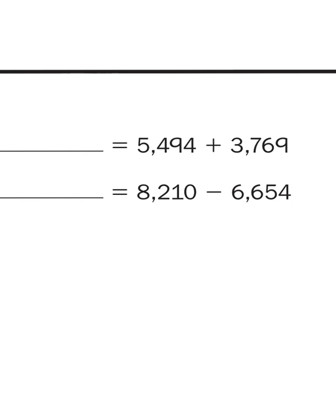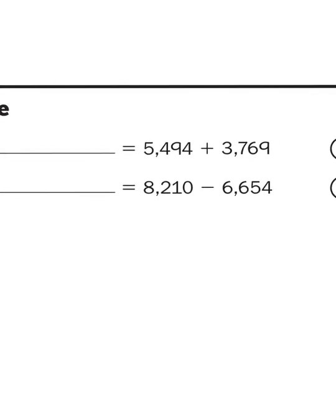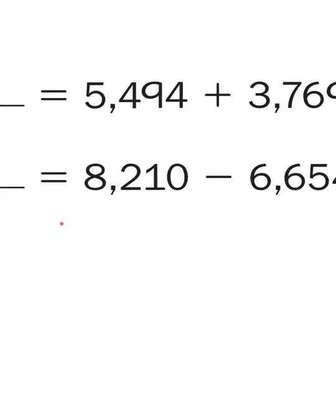And let's try number two - not number two, it's number six, but it's the second problem right here: 8,210 minus 6,654. Well, number sentences side by side aren't helpful, let's make it vertical.